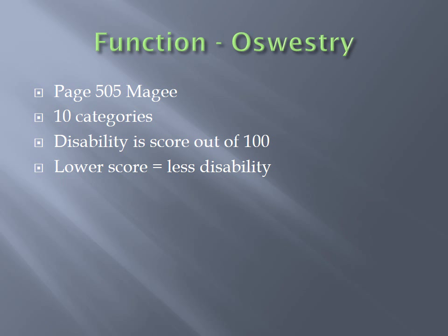In your collection of data during the history, one of the things you should evaluate are functional questionnaires, one of which is the Oswestry Questionnaire. This is designed to interpret the patient's functioning outside of physical therapy during a number of different activities, found on page 505 of your McGee text. There are ten different categories and disability is scored out of 100 points — the lower the score equals less disability. This validated tool is sensitive to change and can determine if the patient is getting better, worse, or staying the same, which is vital in triggering a discharge, change in treatment plan, or referral.